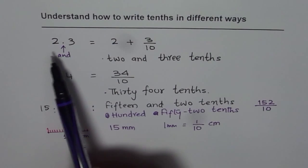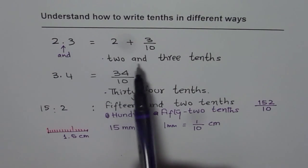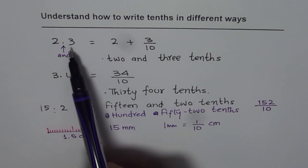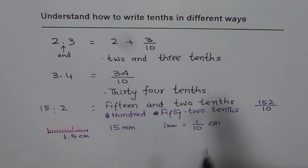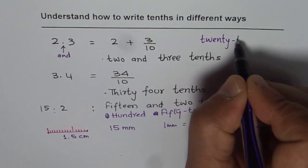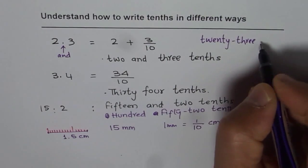So a decimal number could be written as—let's go through these examples: 2.3 as 2 and 3 tenths, or as 23 tenths.